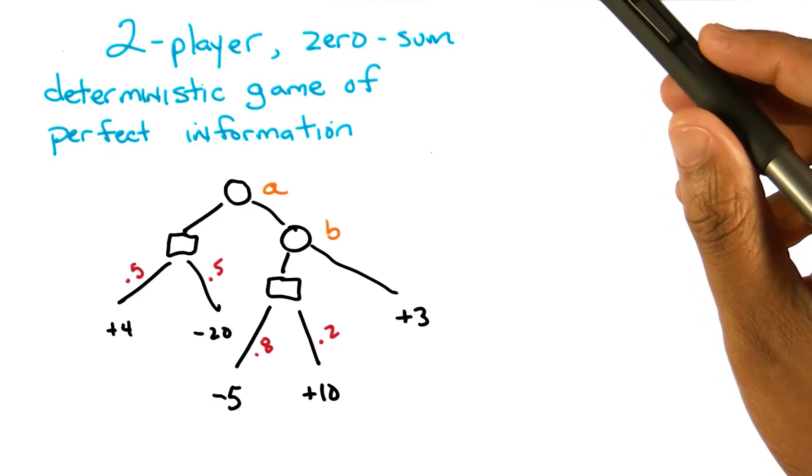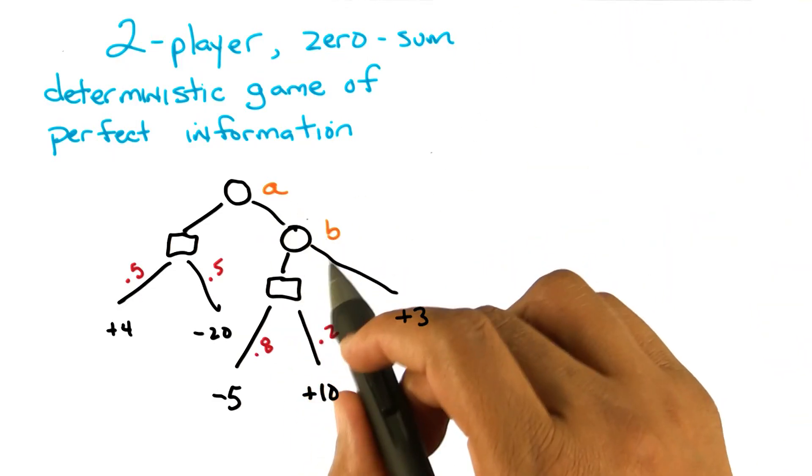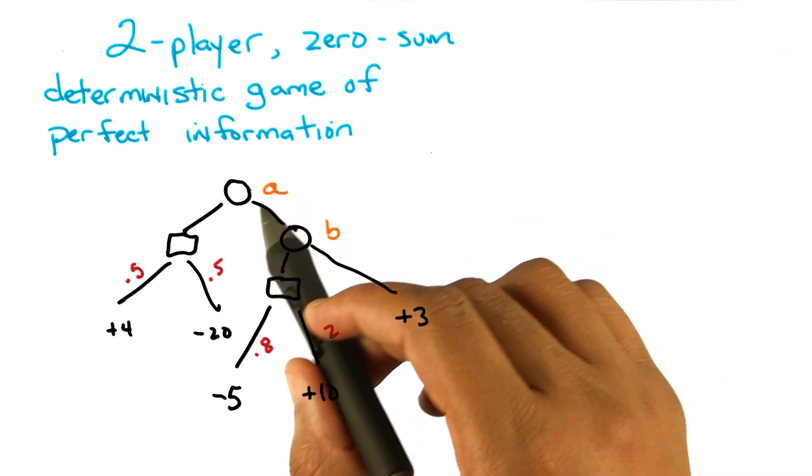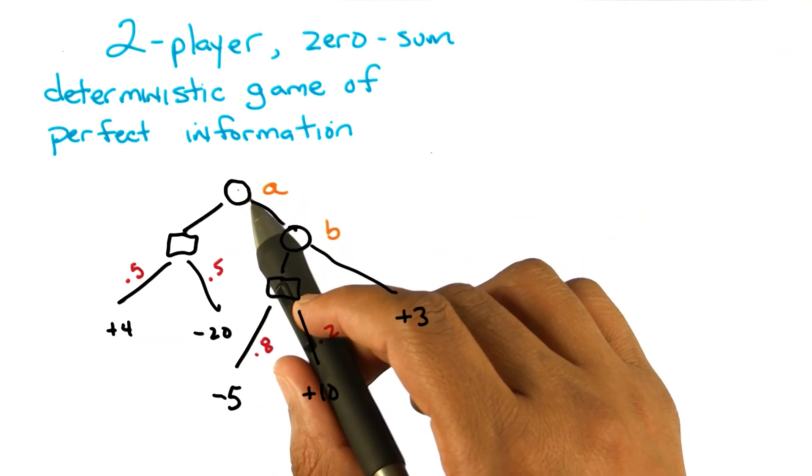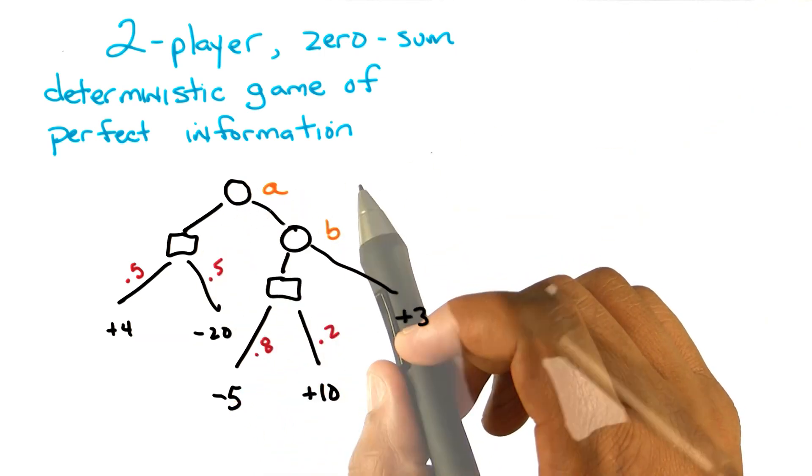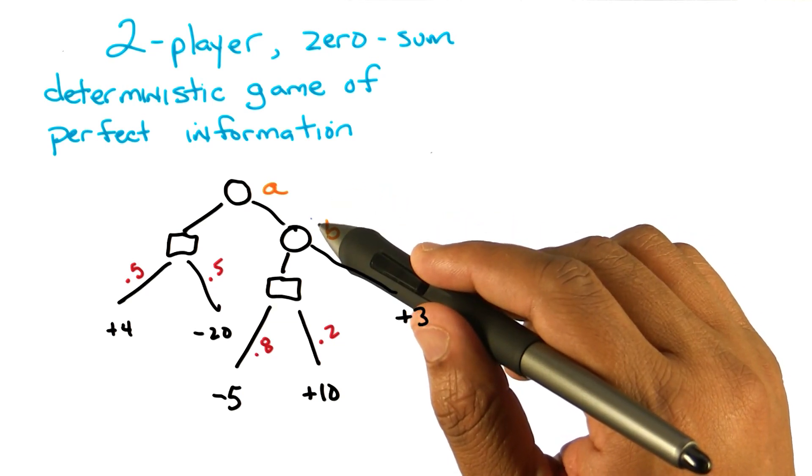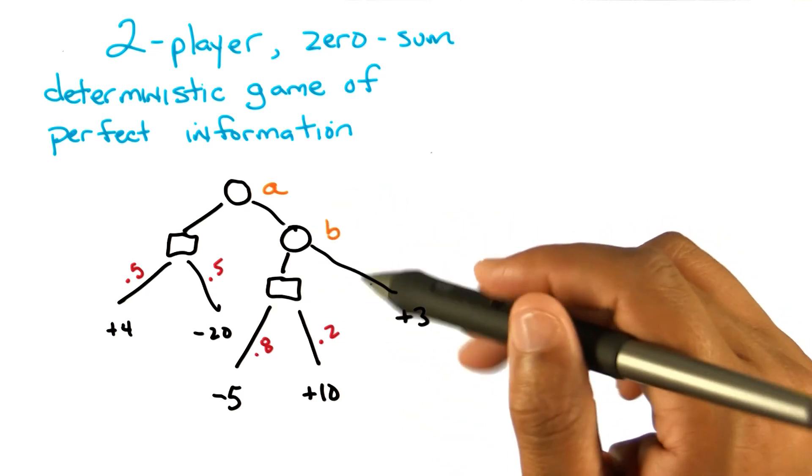So here's another game tree. We have again two players, A and B. And A gets to make a choice first to go left or right. And B will find herself in a situation perhaps where she gets to choose to go left or right as well.